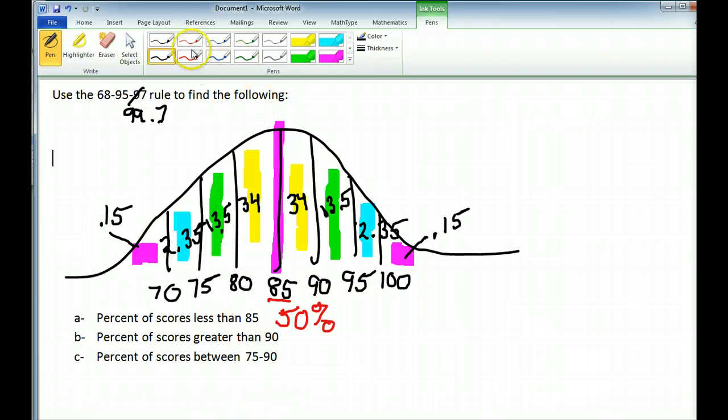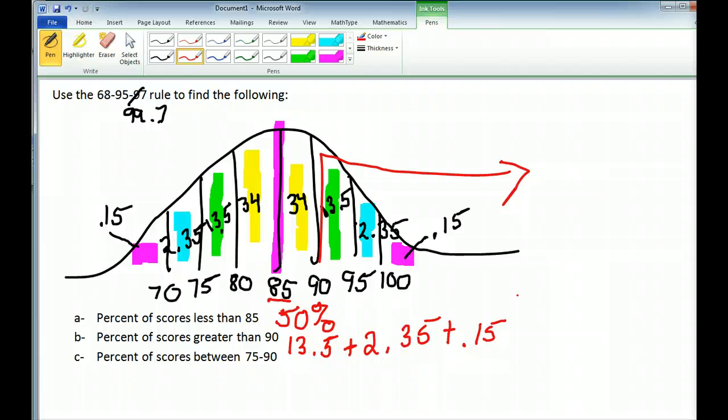Percentage of scores greater than 90. Well, 90 is right here. Greater than 90 goes this way. I'm going to go ahead and add up all of my percents greater than 90. And I think having the picture really does help when you can see those percents right on a diagram. 13.5 plus 2.35 plus 0.15 gives you 16%.